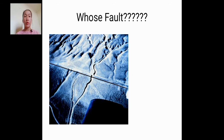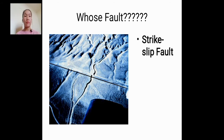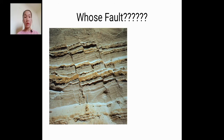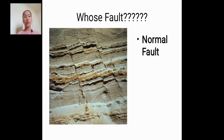Another one — hindi ito inclined fault, so ito ay strike-slip fault kasi ito lang naman ang hindi kasali sa inclined fault — normal fault and reverse fault lang ang inclined fault. Next — gamitin natin yung kamay natin, sundan yung pattern — inclined fold yan. Anong nangyari? Yung hanging wall ay bumaba — so normal fault yan. Basta tatandaan ninyo lang sa pag-identify ng fault: tingnan ninyo muna kung inclined fault ba yun yung pinapakita sa picture, and then gamitin yung kamay para malaman kung nag-move yung hanging wall pataas o pababa.